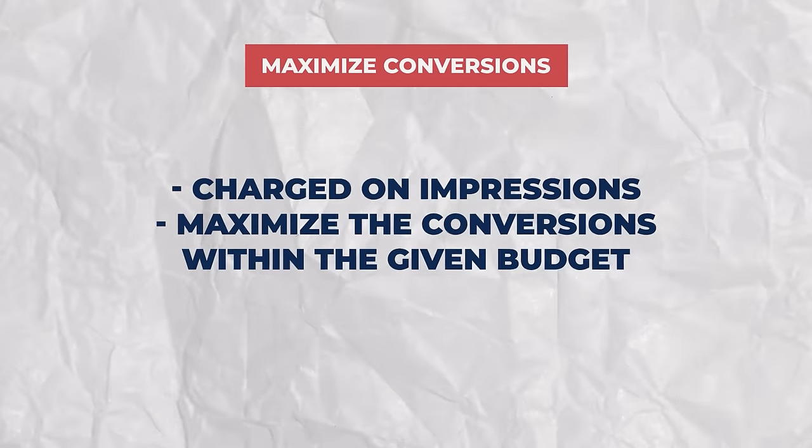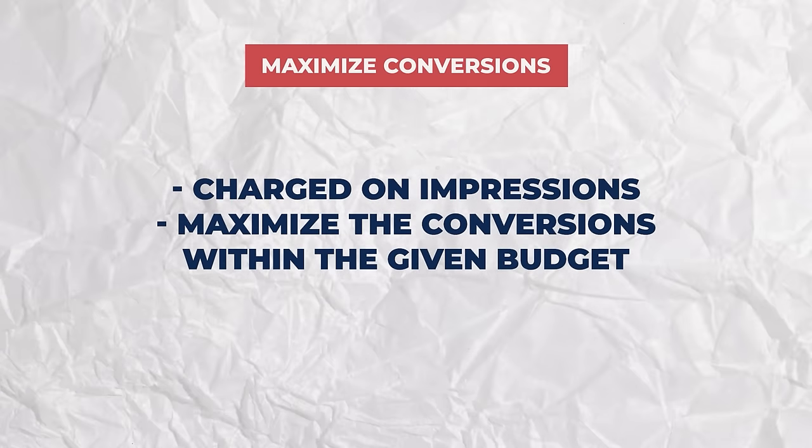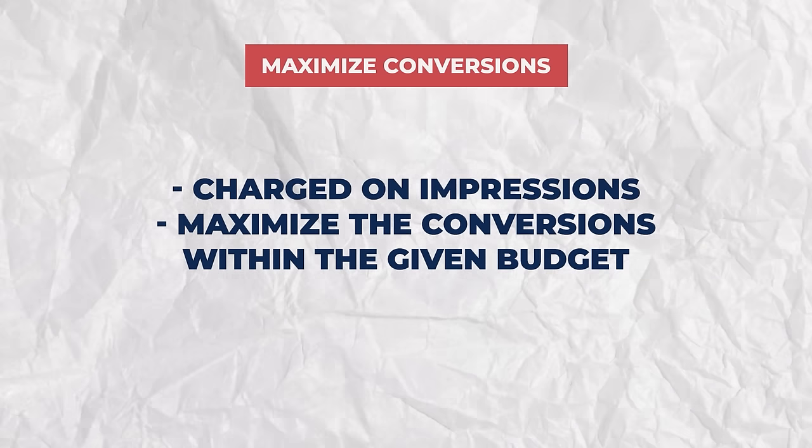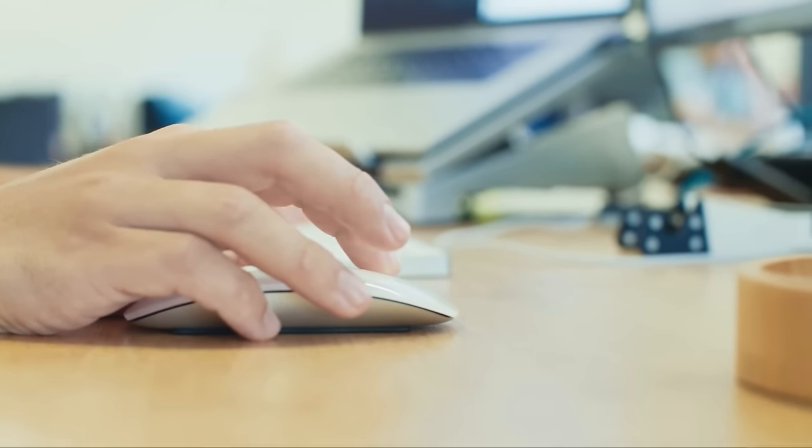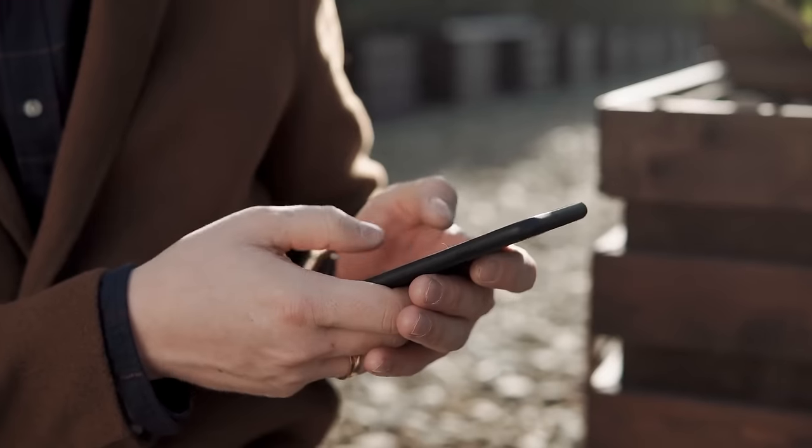The next bidding option we use more commonly is maximize conversions. It charges you on impressions, but unlike target CPM, Google goes out there and tries to get as many conversions as possible with your entire budget. Conversions are actions that a user makes on your website — clicking a button, adding something to a cart, giving a phone number, essentially anything you want. We recommend starting with maximize conversions in an ad account with zero data, because you want to get as many conversions as possible.